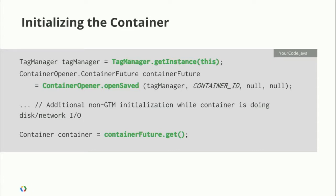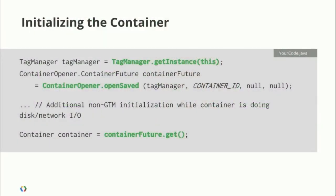That doesn't actually return immediately. When you are first running your app for the very first time, there's been no communication to the web. Your app needs to go to the web to get the current version of the container. We don't know how long that's going to take, and we don't even know whether they're connected to the network. So when you call OpenSaved, we return what's called a future — in the background it's going to do its network communication so we don't stall while waiting to open the container. While that's going on, you can do additional initialization of your application. And then when you actually need a container value, you call ContainerFuture.get, which will wait until the download has happened if necessary.